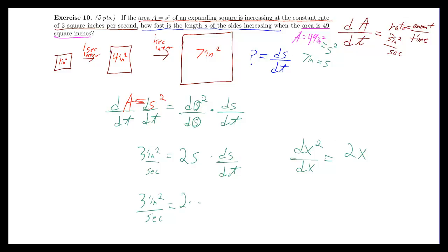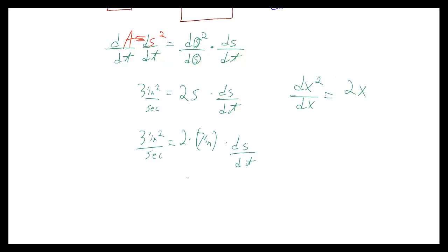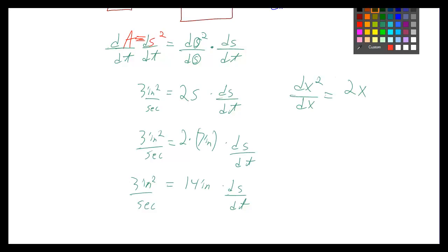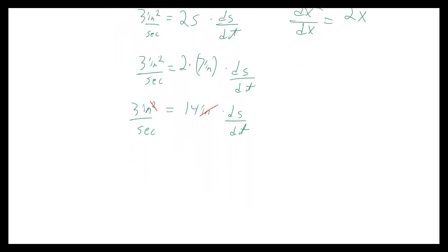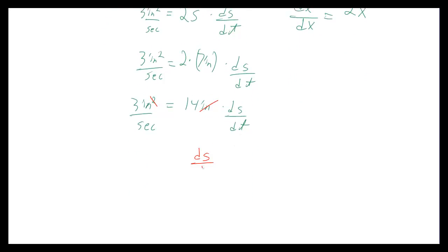So we can put in 3 inches squared per second is equal to 2 times 7 inches times dS dt. So if we keep going with that, we have 14 inches times dS dt is equal to 3 inches squared per second. And then we can cancel out 1 of the inches on each side. So if I get rid of 1 on this side, I can just get rid of the 2 as an exponent. And I'll just be left with inches to the first power, which is what I want. So I have 3 inches per second is equal to 14 dS dt. So now I get dS dt is equal to 3 divided by 14 inches per second.